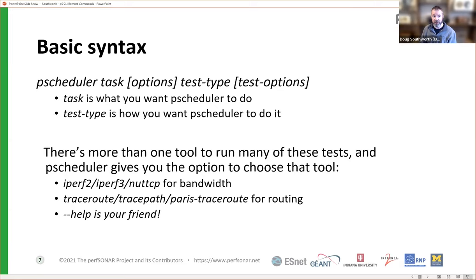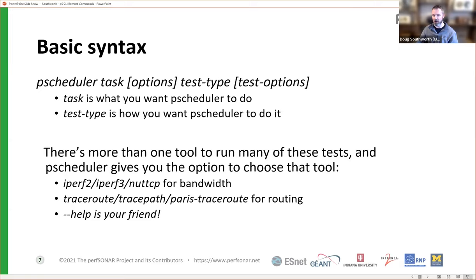The basic syntax is fairly straightforward: it's just pscheduler, pick the task you want, the test type, and then throw some options on the back. There are several different tests that can be run for any one particular type — multiple options for bandwidth tests, different options for trace routes, and so on. The --help flag is absolutely your friend. You can do pscheduler task --help to see all available tests, and once you pick a task you can use --help again to see specific test options.